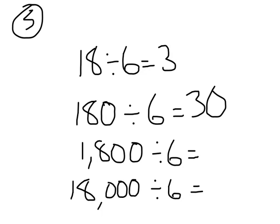1,800 divided by 6 — I'm dividing 18 hundreds into 6 groups. How many hundreds would be in each group? Three hundreds would be in each group. Write that number in standard form — it's 300. 18,000 divided by 6 — how many thousands would be in each group? Three thousands would be in each group. Write that number in standard form — it's 3,000.